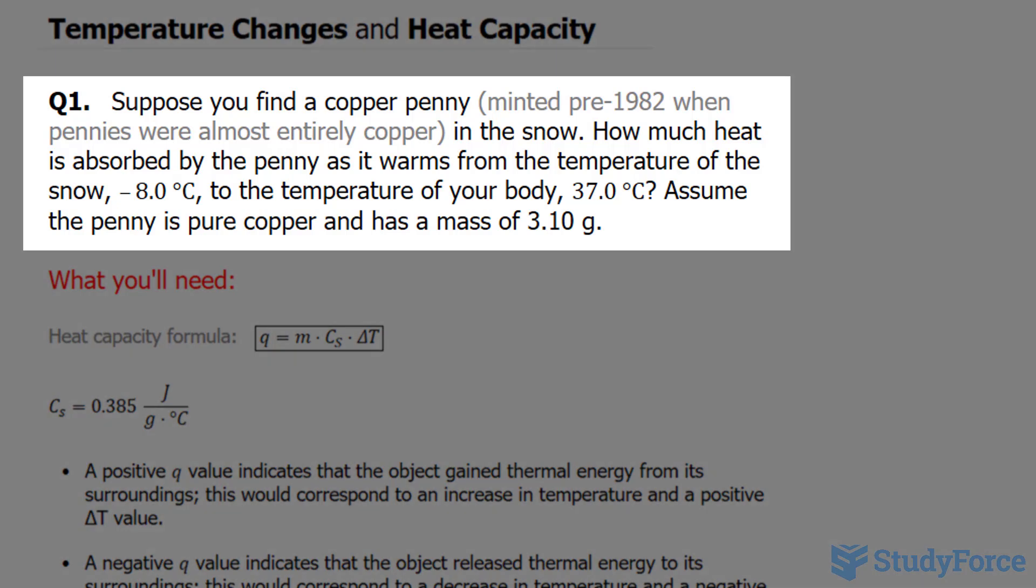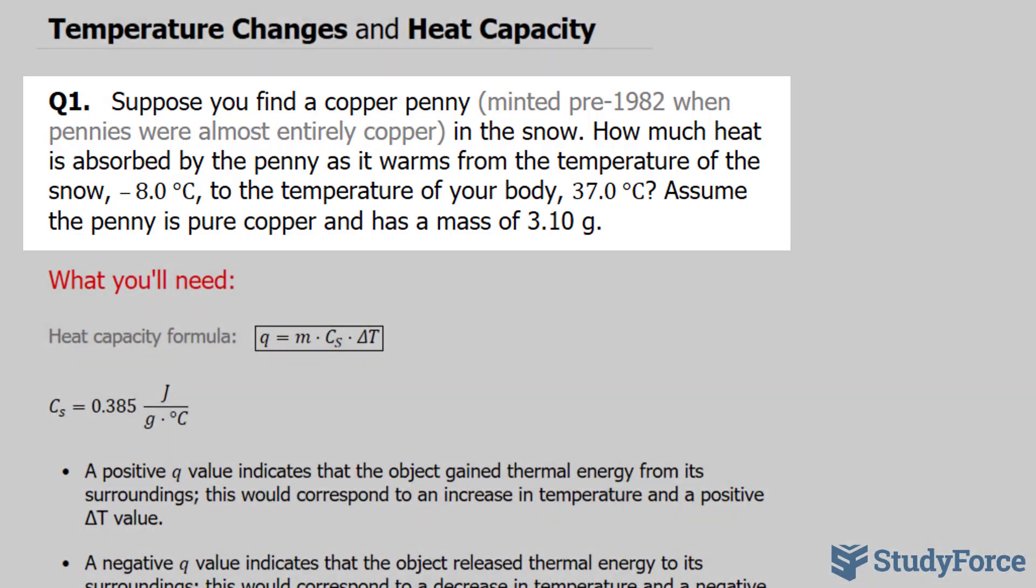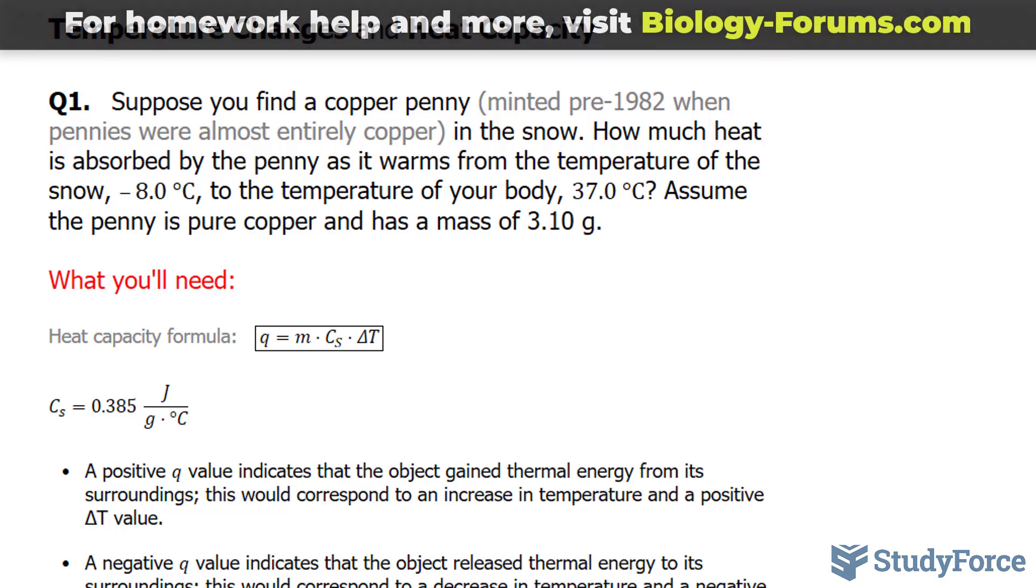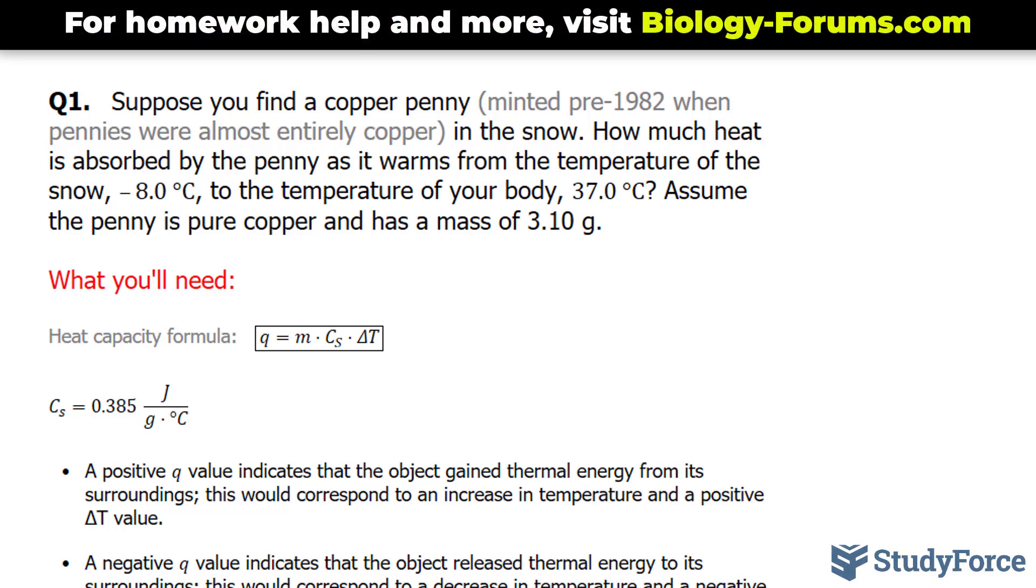The first question reads: suppose you find a copper penny, minted pre-1982 when pennies were almost entirely copper, in the snow. How much heat is absorbed by the penny as it warms from the temperature of the snow, which is negative 8.0 degrees, to the temperature of your body, 37.0 Celsius? Assume that the penny is pure copper and has a mass of 3.10 grams.